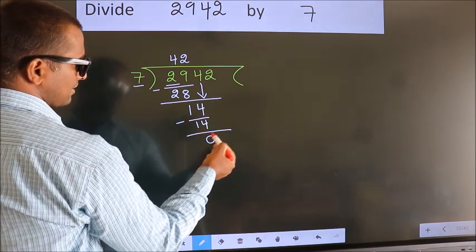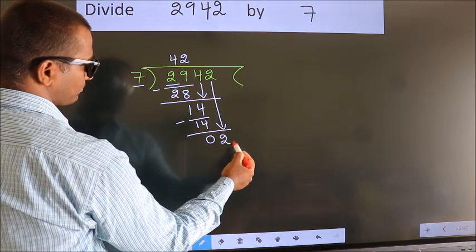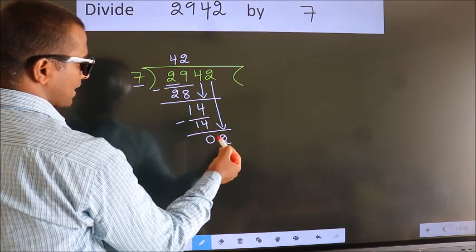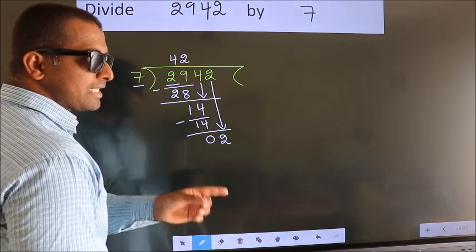After this, bring down the beside number. So 2 down. After this step, the mistake happens. And the mistake is this.